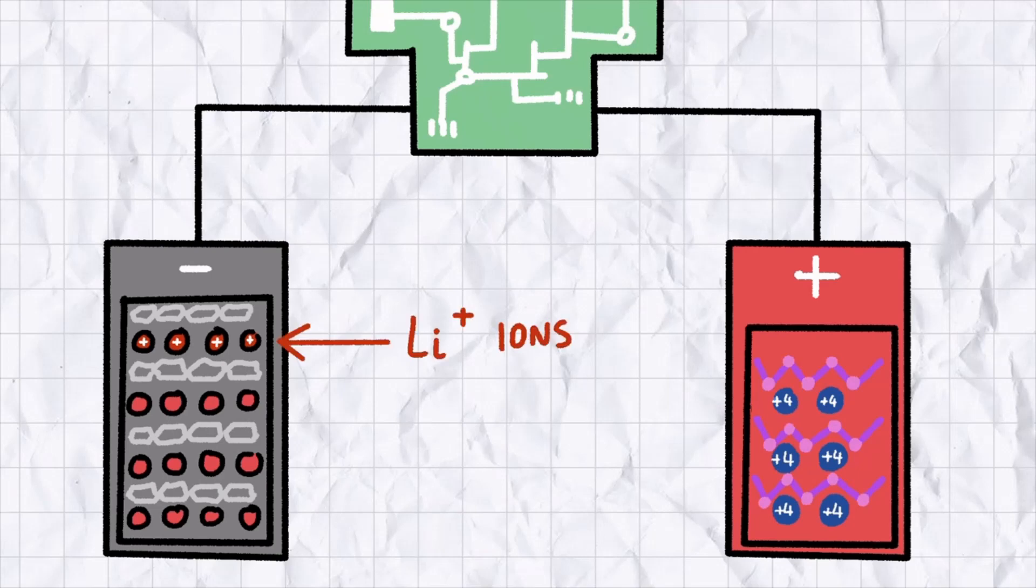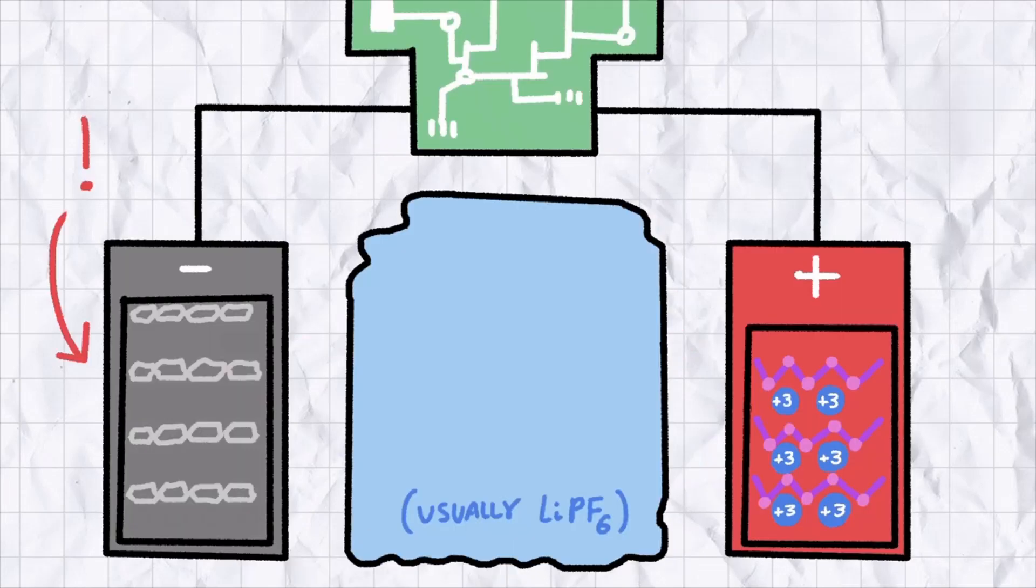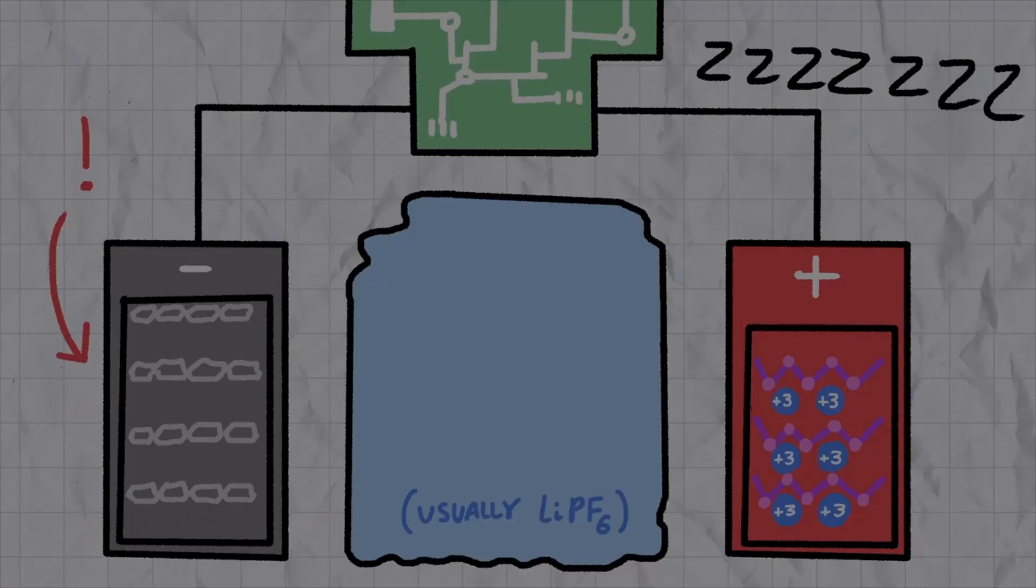After losing an electron, the lithium atoms, now positively charged lithium ions, move across the positive terminal through a conductive salt layer. This migration will continue until the negative terminal runs out of lithium ions that ionize, at which point your phone will run out of charge.